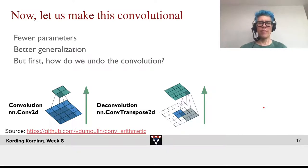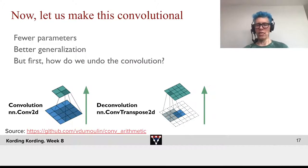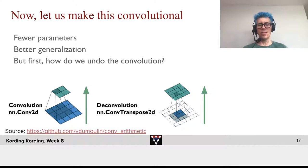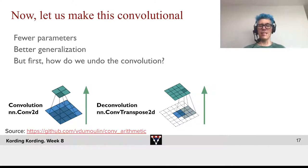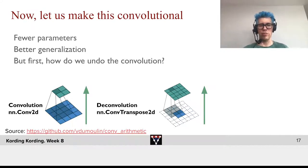Just like before, if we would use a fully connected neural network for encoding and for decoding, they would have crazily large numbers of parameters. As such, we might hope that in this context of autoencoders, we can equally get a lot of mileage out of convolution.